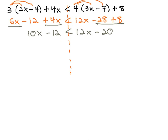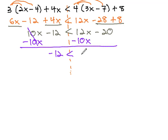Now, we'd like to get the variable on only one side of the inequality. Let's move the 10x, because it's smaller, by subtracting 10x from both sides. This gives us negative 12 is less than 2x minus 20.